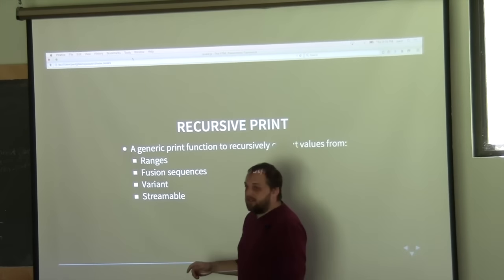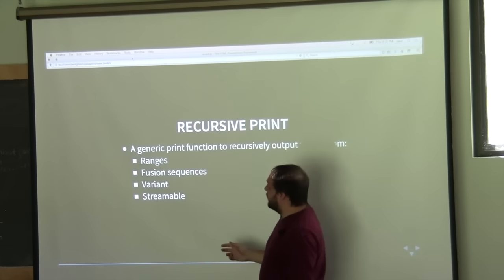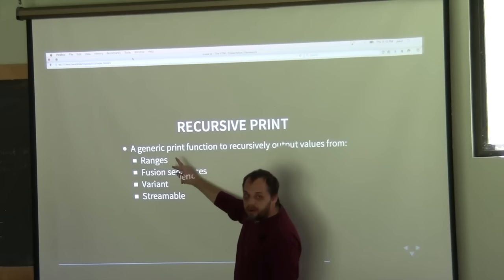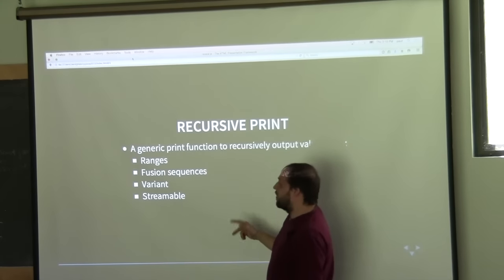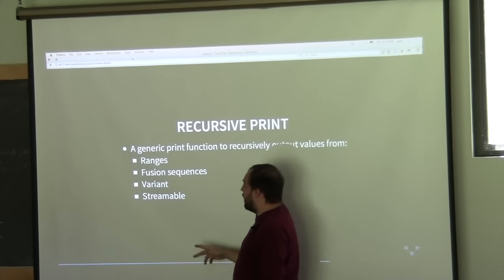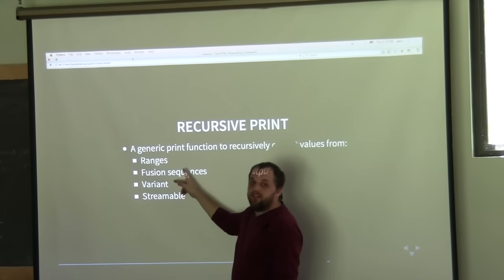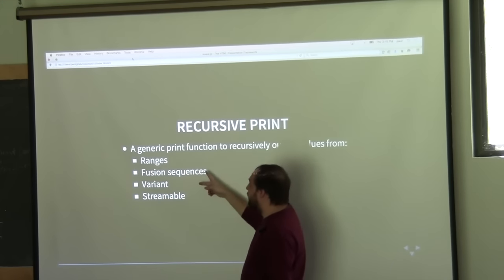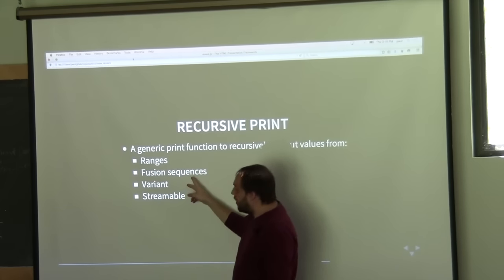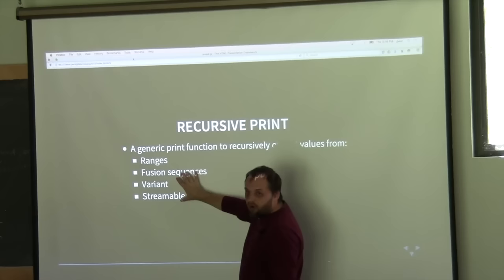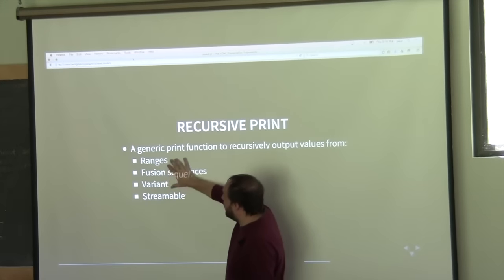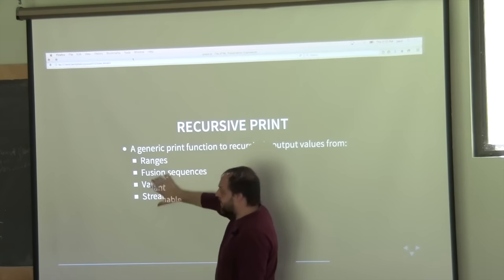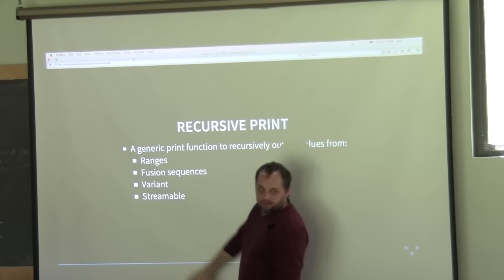Say for instance we wanted to implement a generic print function that recursively outputs values, and we wanted it to work over ranges, fusion sequences, Boost.Variant, and streamable types. But there are a couple of problems: Boost.Array is both a range and a fusion sequence. Also, fusion sequence and variant provide streamable operators, so those are actually streamable as well — there's some overlap with these traits.